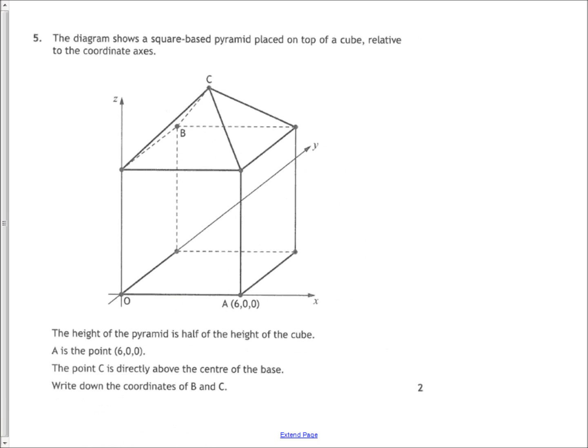In this question, you've got a square-based pyramid placed on top of a cube. Key word that it's a square-based pyramid, and also that what you're talking of on the bottom is a cube. You're also told that the height of the pyramid is half the height of the cube, and that itself is another key thing you've got to pick up on. So you get three key bits of information there, as well as the coordinate of point A.